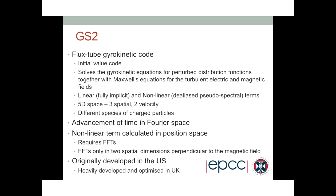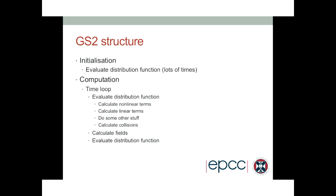GS2 was originally a US code but it's heavily used in the US and the UK. In terms of what this code is actually doing at a high level, it does two things. First, it does some initialization and setup — loads some data and calculates some stuff at the beginning. For GS2, the initialization can be quite costly: for a big simulation it can be over 5 or 10 minutes.